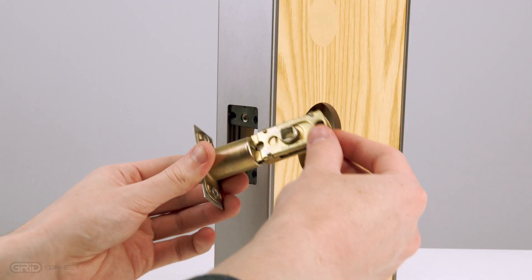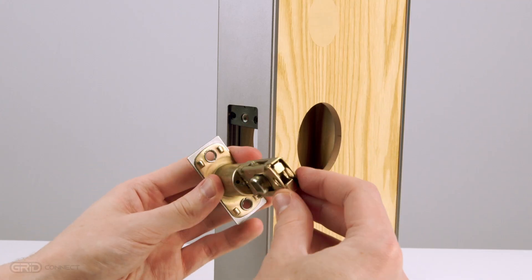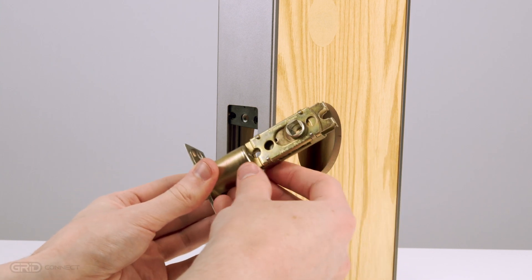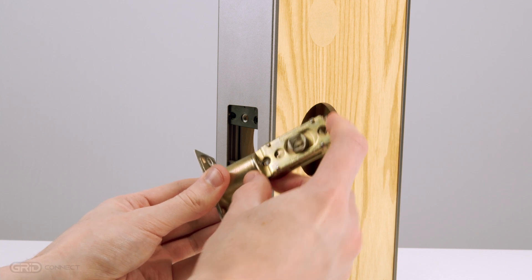Locate the latch. If your door has a backset of 70mm, push the spindle slot outwards to the label marked 70mm. If your door has a 60mm backset, leave it retracted.